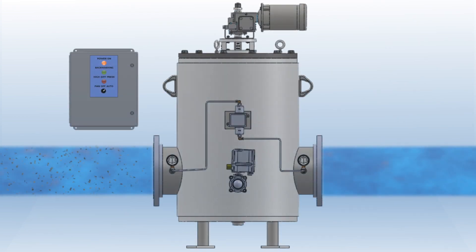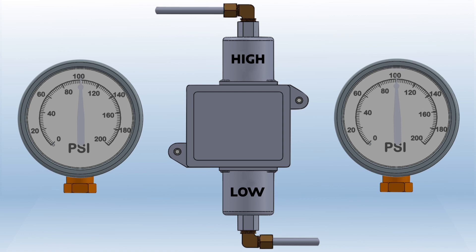If the eliminator sees a sudden high debris loading, the differential pressure switch can also trigger a backwash sequence. The differential pressure switch measures the difference in pressure between the inlet and outlet.